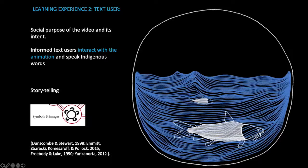This next learning activity is based around text use. To begin, the teacher explicitly explains the social purpose and intent of the video. This enables the students to be informed text users as they interact in pairs with the animation. Learning in this way by interacting with the animation connects with the Aboriginal tradition of using symbols and images to convey knowledge.